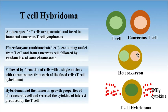Formation of this heterocaryon is followed by random loss of some chromosomes, then by formation of cells with a single nucleus, with chromosomes from each of the fused T-cells and cancerous cells. This resulting cell is known as T-cell hybridoma.